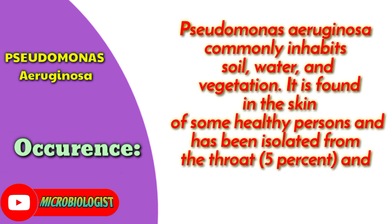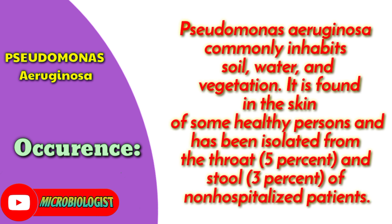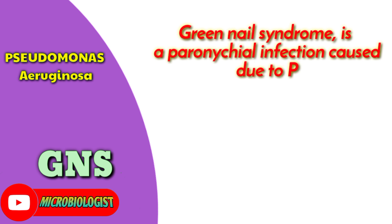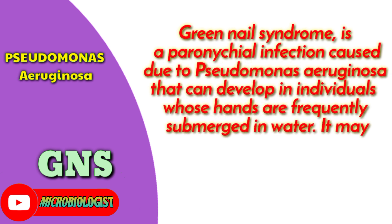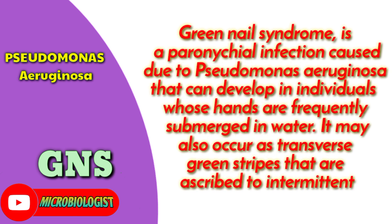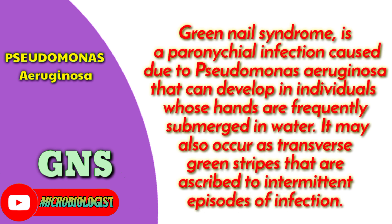It is found in the skin of some healthy persons and has been isolated from the throat (5%) and stool (3%) of non-hospitalized patients. Green nail syndrome is a periungual infection caused by Pseudomonas aeruginosa that can develop in individuals whose hands are frequently submerged in water. It may also occur as transverse green stripes ascribed to intermittent episodes of infection.